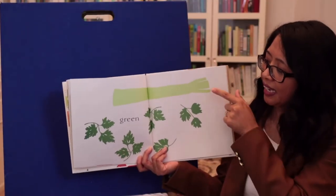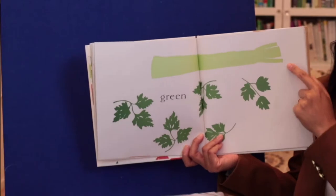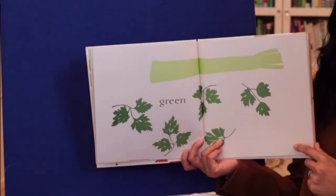Green. Here's celery. And these are called parsley.